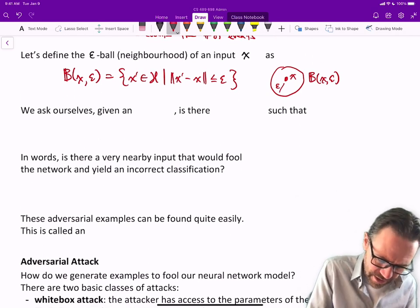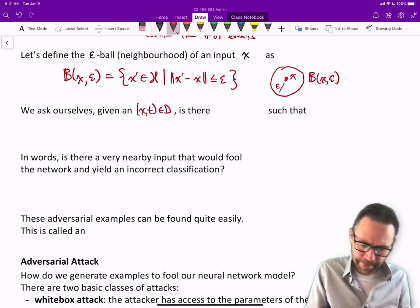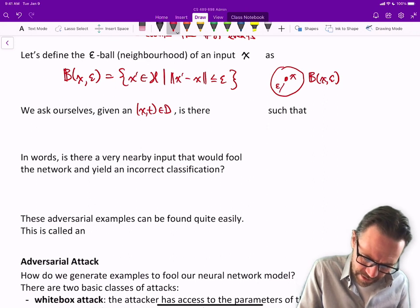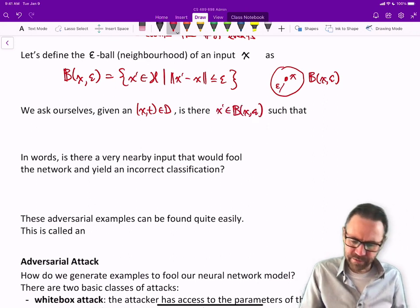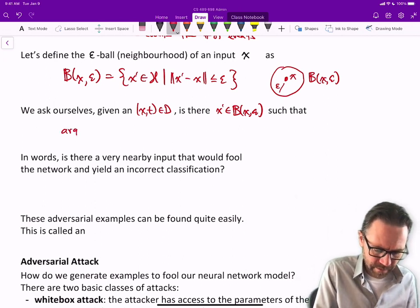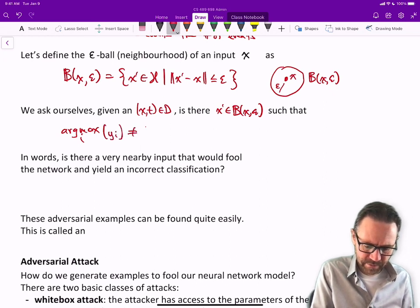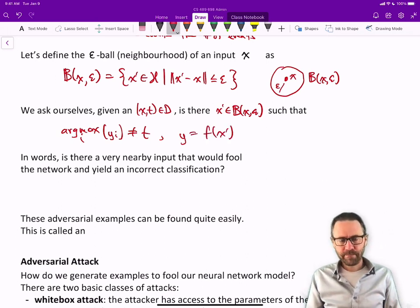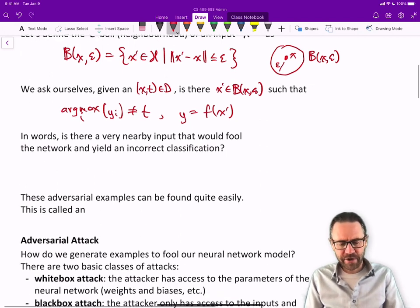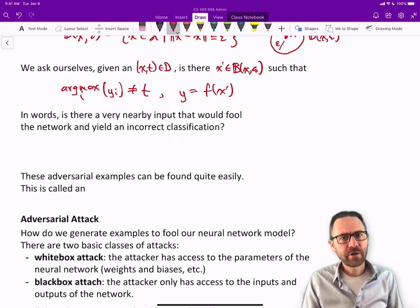We ask ourselves, given x, t in D, is there x' in the epsilon ball around x such that argmax over i of y_i is not equal to t, where y equals f(x')? In other words, is there a very nearby input that would fool the network and yield an incorrect classification?